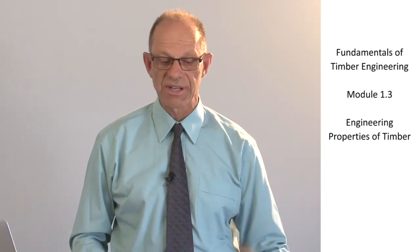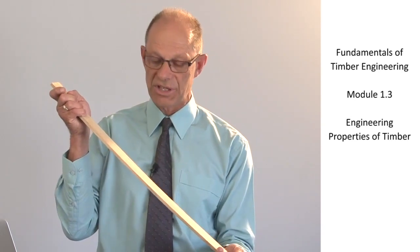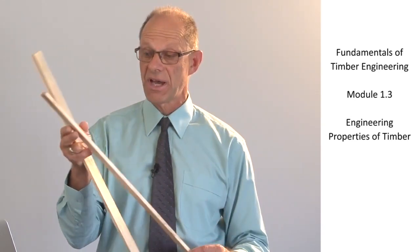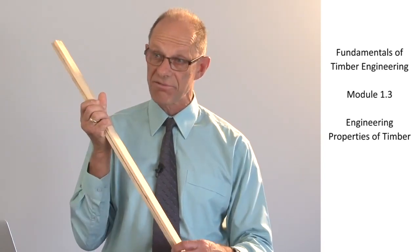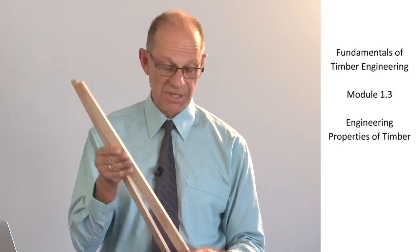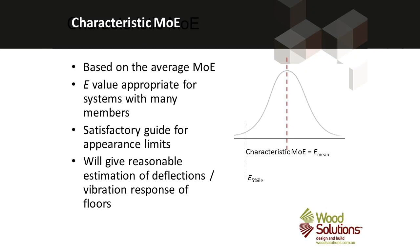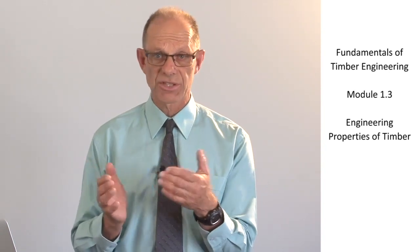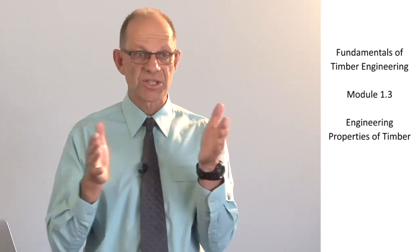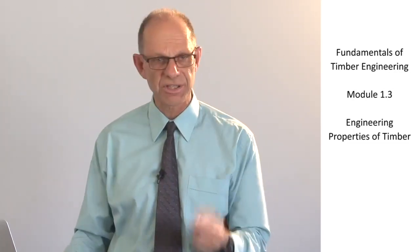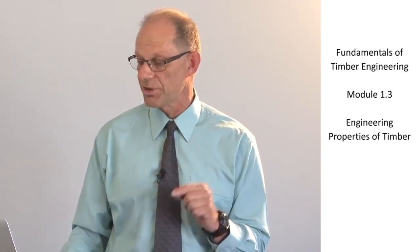Looking at each property in turn: the characteristic modulus of elasticity is the average modulus of elasticity for the entire grade. Every piece of timber may have a slightly different modulus of elasticity, but it's the average across all pieces in the grade. Statistically, this mean sits at the centre of the distribution, so the modulus of elasticity quoted in AS1720.1 for each grade is the average. This is a very good guide for the deflection of elements such as floor beams, where a large number work together, giving very reasonable estimations of stiffness performance in service.